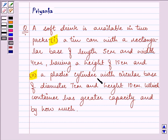a plastic cylinder with circular base of diameter 7 centimeters and height 10 centimeters. Which container has greater capacity and by how much?